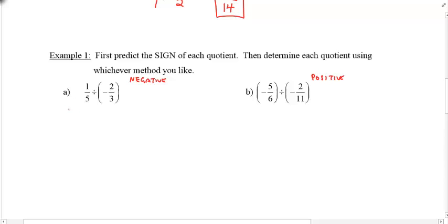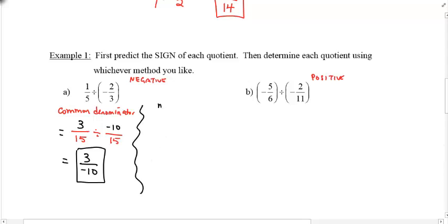So for the first one, by using the common denominator method, the common denominator between 5 and 3 is 15. So that would be a 3, right? And then 3 times 5, so 2 times 5 is 10, so negative 10. And our answer here then just asks you to take 3 divided by 10, and there's your answer.